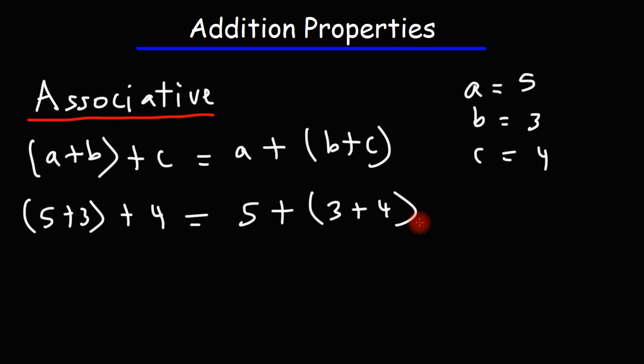So let's work inside the parentheses first. 5 plus 3 is 8. 3 plus 4 is 7. 8 plus 4 is 12. 5 plus 7 is also 12. So once again, it doesn't matter the order of which you add things. If you're only adding, the value will remain the same.